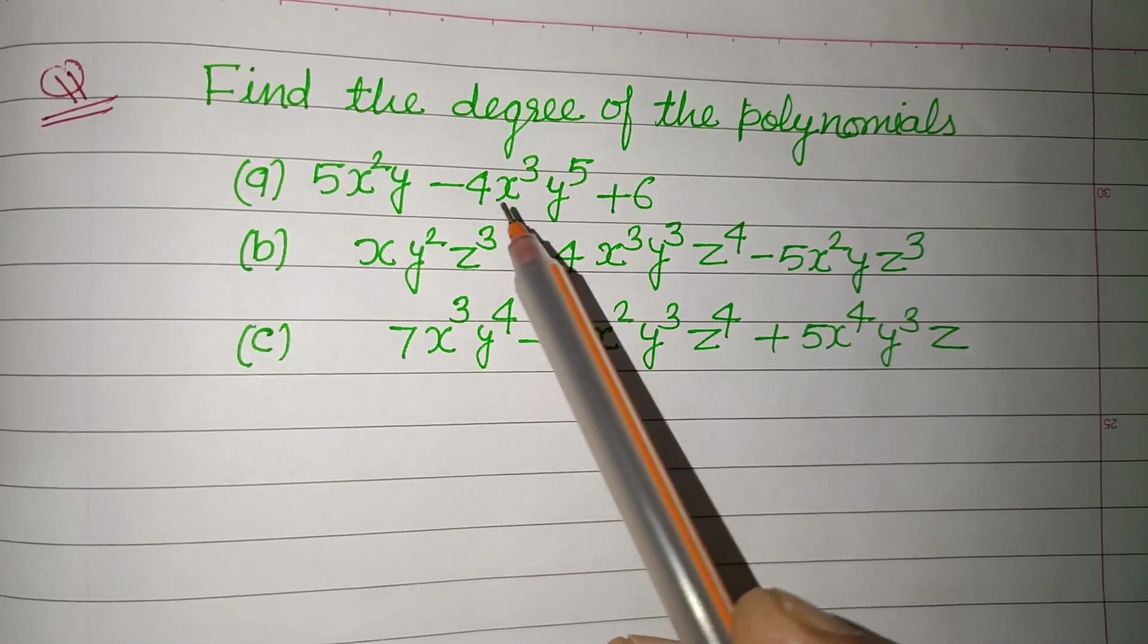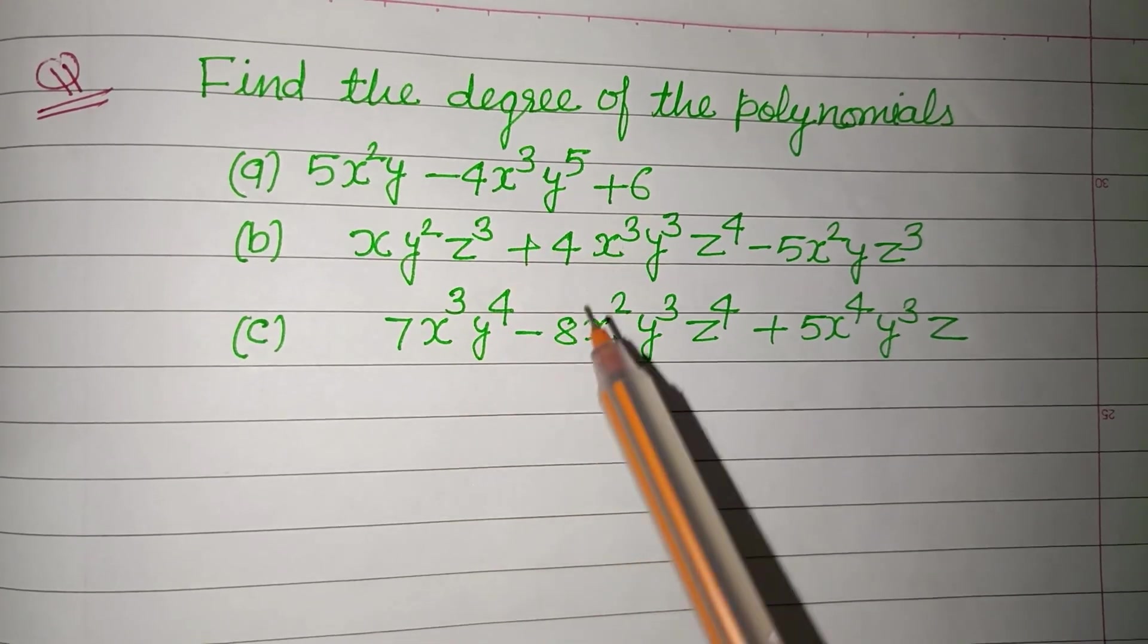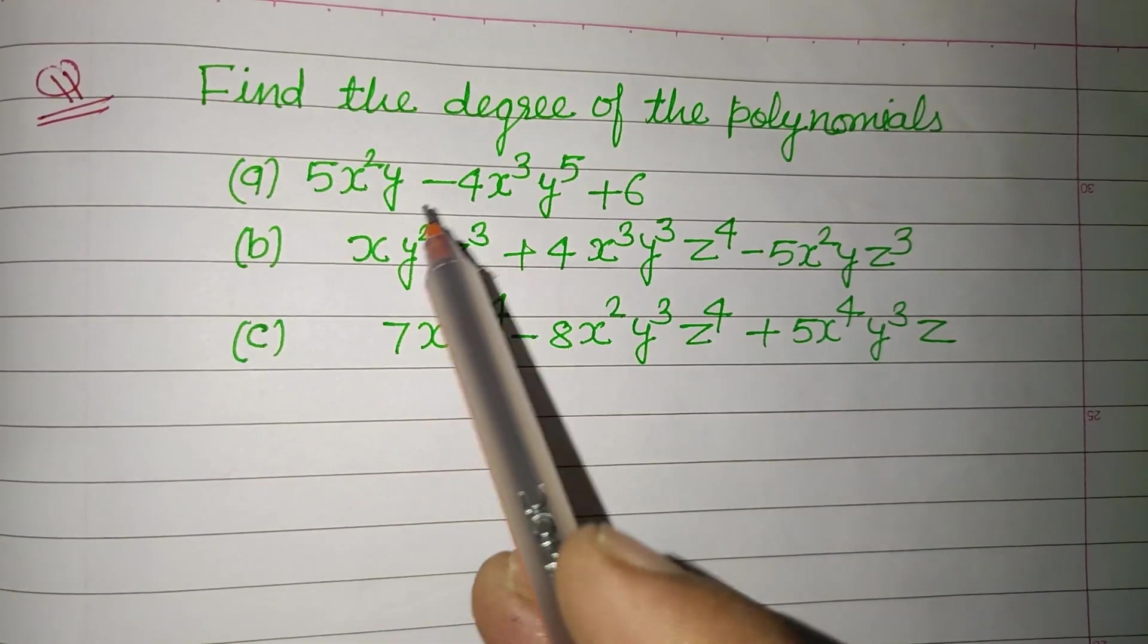Here some polynomials are given. For each term, in each term we add the powers of the variables, only variables.